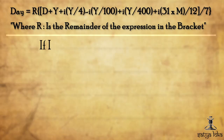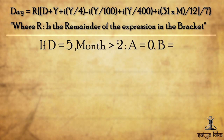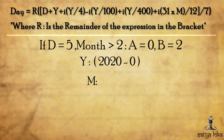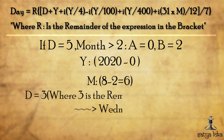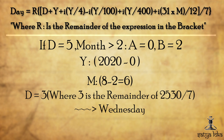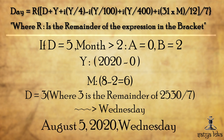Let's take the example of August 5, 2020. Here d = 5. Since the month (August = 8) is greater than 2, a = 0 and b = 2. Therefore y = 2020 − 0 = 2020, and m = 8 − 2 = 6. Substituting these values into the formula and solving, we get day = 3, which corresponds to Wednesday. If you verify, August 5, 2020 was indeed a Wednesday.